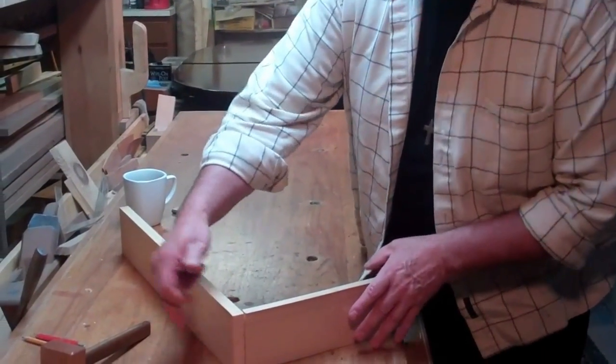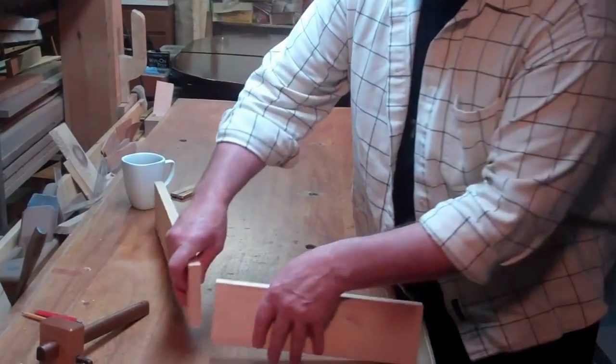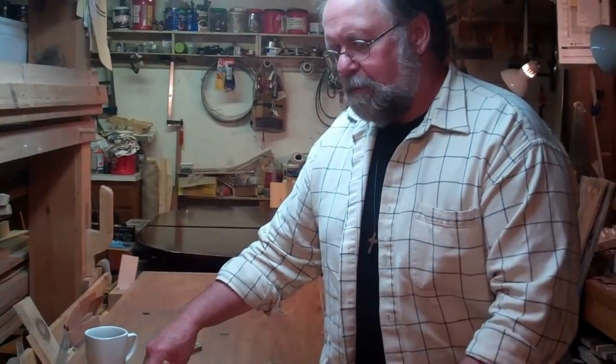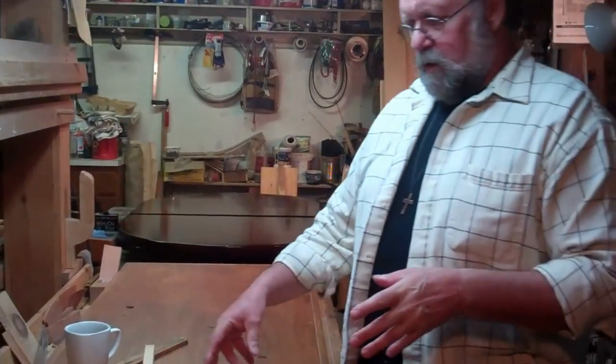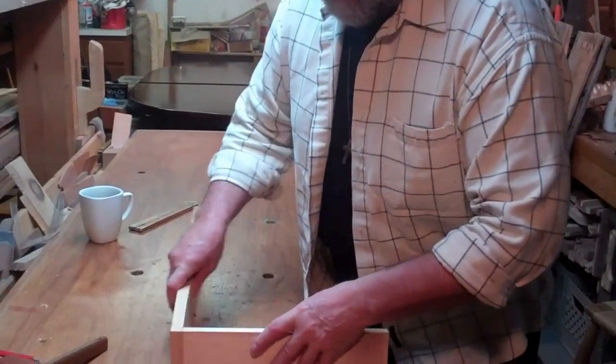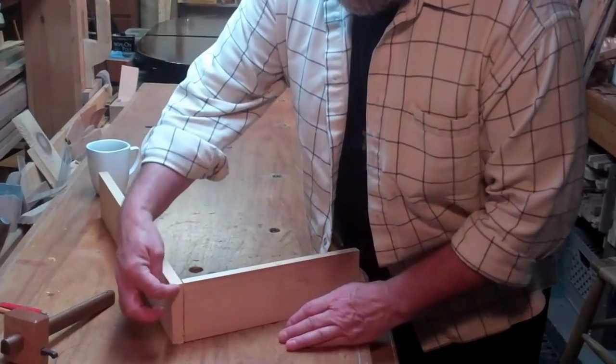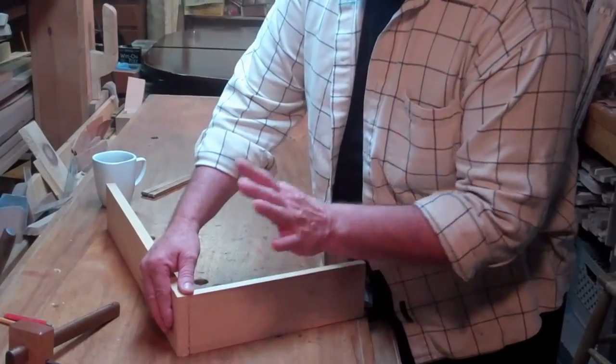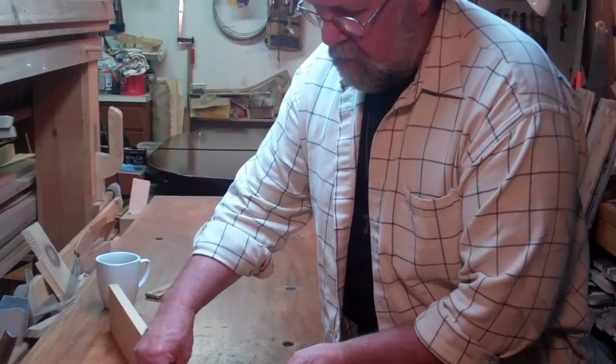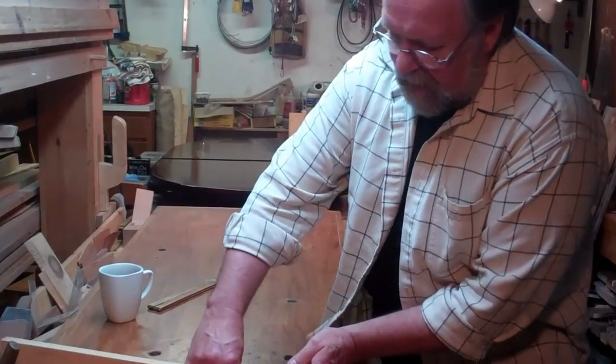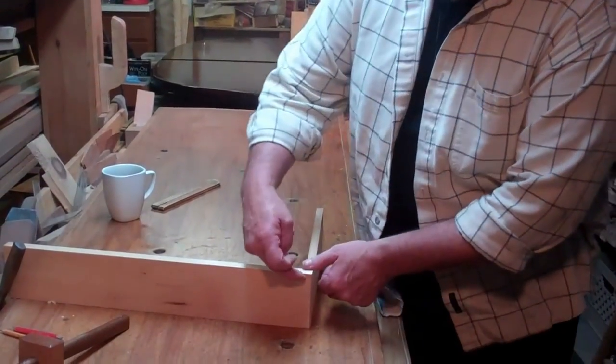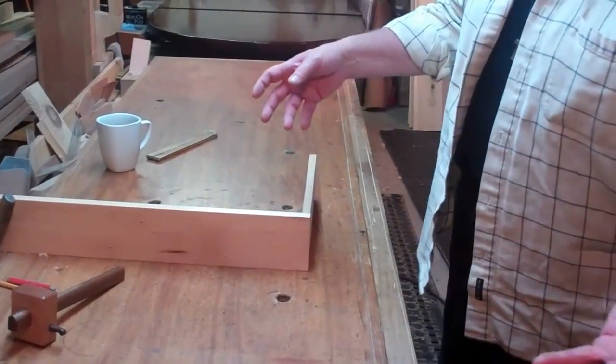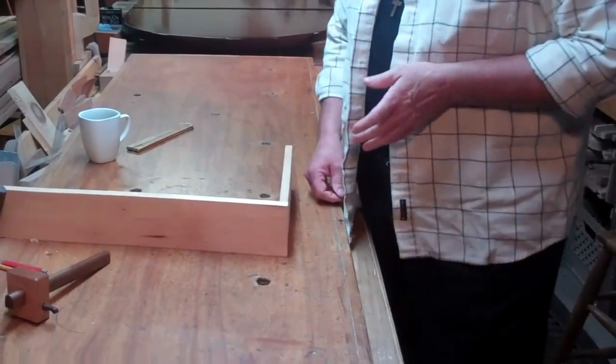Now if we nailed that together from this face, that would work, but it would have a problem. No matter which way we look at this piece of wood, we're either going to have this end showing. In traditional work, showing the end grain was frowned upon. Or we could turn it around like so - you don't see the end grain, but then you would see the nails or screws.